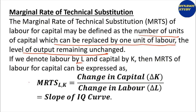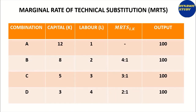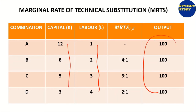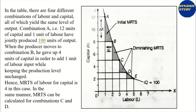MRTS is basically the formula for the slope of the isoquant curve — change in capital by change in labor. We can represent this in a tabular and diagrammatical format. When we increase one unit of labor, we have to decrease capital to keep the output level the same. The marginal rate of technical substitution ratio can be represented in the form of a diagram, where output is, for example, 100.